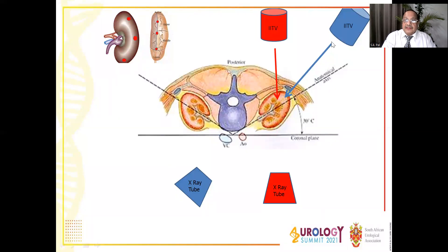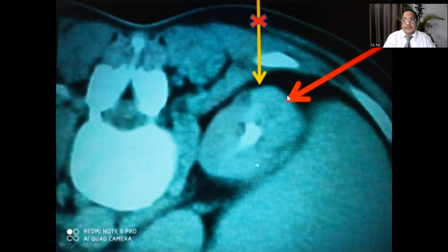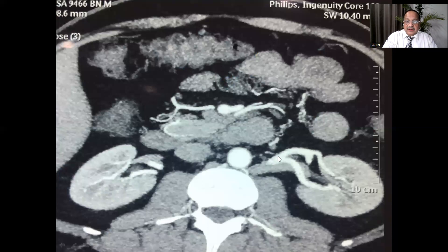Therefore, you should position the C-arm with a thirty degree tilt towards you. It means the image intensifier should be towards your head and the x-ray tube should move away from you, so that your genitals are also protected and your fertility is maintained. When you make a puncture in this direction with the C-arm tilted thirty degrees towards you, you are likely to make an entry through the convex border of the kidney, while if you make the C-arm at zero degrees and try to make a puncture, you are likely to puncture through the middle of the renal parenchyma.